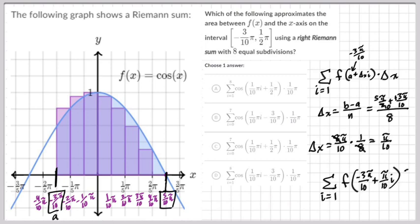Inside here we're going to have -3π/10 + π/10·i, and then we have π/10 on the outside multiplying by π/10. And then what is f? f is cosine, oh I should have just subbed that in when I had the chance.